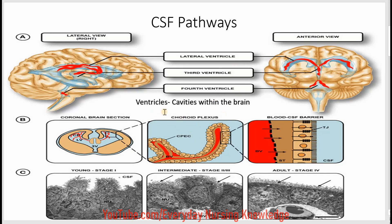The ventricles are cavities within the brain. This is the picture of the lateral view of the brain and this is the anterior view. You can see the pictures of the ventricles, which are cavities or spaces within the brain.